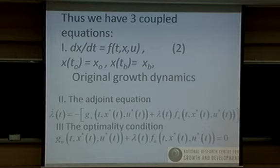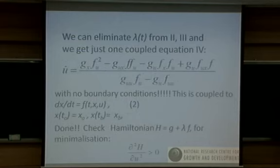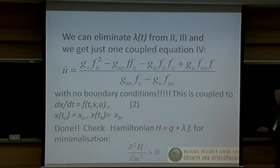We have initially, of course, three coupled equations. That one's the original one, the original growth dynamics. We've got the adjoint equation and the optimality condition. And the optimality condition, you can put the lambda there and then differentiate and put lambda dot there. And so you're going to get a single equation for u. And that's the unusual bit, I suppose. And there it is there. And that's the actual equation for u. You've got no boundary conditions on that particular equation, but you've got two on the other. So it's a question of existence to discuss. And you can check that the Hamiltonian G plus lambda F is minimized.